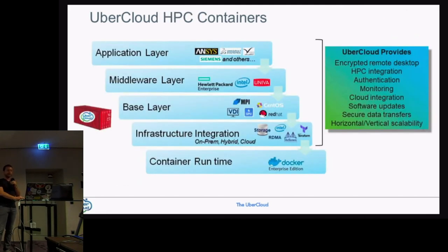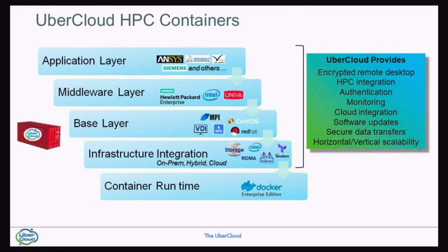An UberCloud container at the very bottom uses Docker runtime. We also have an HPC layer which makes MPI possible. This is quite unique — we like to put MPI-related tasks inside the container as well, so when we go into a compute environment we are using the MPI that we brought. A lot of people think of MPI as part of the infrastructure; we believe it's part of the user application, so we port it inside the container.